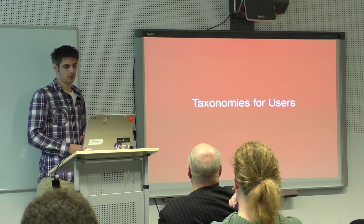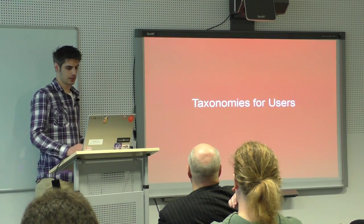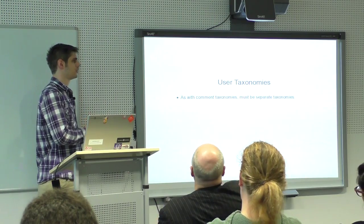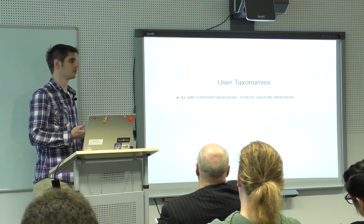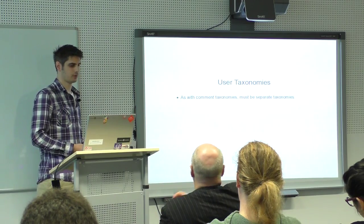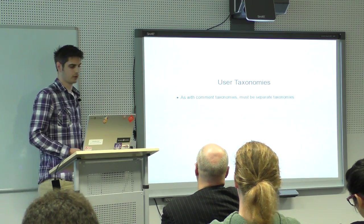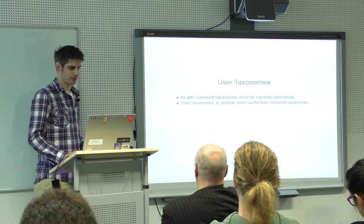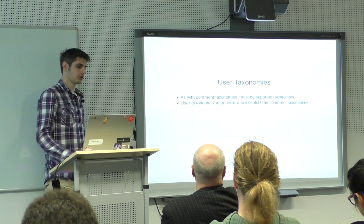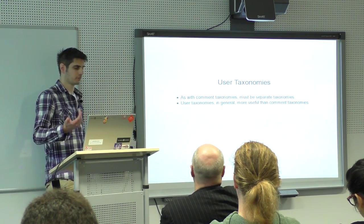As with comments, we can also use taxonomies and their terms for users. As before, we have to use a new, separate taxonomy, because users are stored in a third separate table. So there's a comment with ID 1, a post with ID 1, and a user with ID 1 — and we don't want to mix those. In my opinion, user taxonomies or user terms are more useful and more powerful than comment taxonomies.